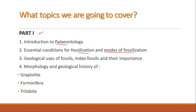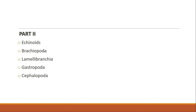After that we'll look at the geological uses of fossils, then index fossils — a very important topic — and their importance. Then we'll cover the morphology and geological history of graptolites, foraminifera, and trilobites. In Part Two, we'll look at echinoids, brachiopoda, lamellibranchia, gastropoda, and cephalopoda.